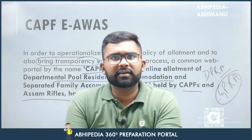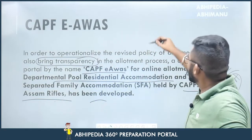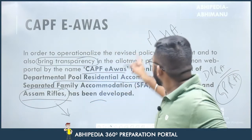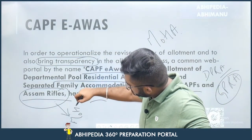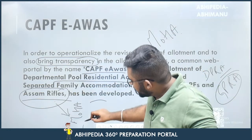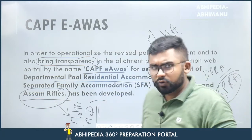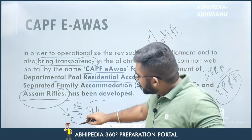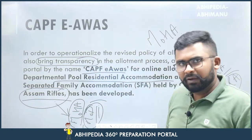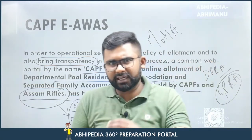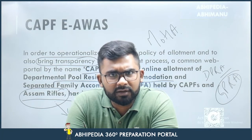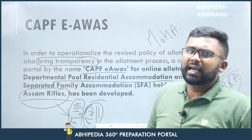These forces are under the direct operational control of the Ministry of Home Affairs. However, Assam Rifles is a special case — its administrative control falls under the Ministry of Home Affairs, but its working or operational control falls under the Ministry of Defence. It works very closely with the Indian Army. So Assam Rifles falls under both: administrative control under MHA and working control under MoD. This is a direct question that can be asked.